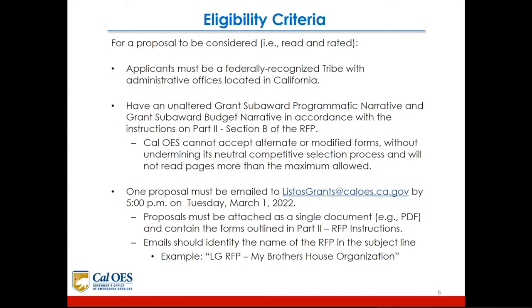For a proposal to be considered, read, and rated, applicants must be a federally recognized tribe with administrative offices located in California. Proposals must have an unaltered grant subaward programmatic narrative and budget narrative in accordance with Part 2, Section B of the RFP. Cal OES cannot accept alternate or modified forms. One proposal must be emailed to listosgrants@caloes.ca.gov by 5 p.m. on Tuesday, March 1, 2022. Proposals must be attached as a single document, and emails should identify the name of the RFP in the subject line.